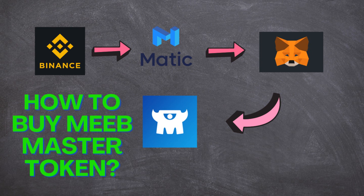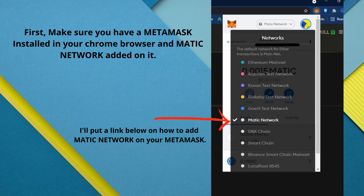Here's a step-by-step guide on how to buy Meeb coins from BNB to Matic, Polygon. First, make sure you have MetaMask installed in your Chrome browser and Matic Network added on it. I will put a link below on how to add Matic Network on your MetaMask.